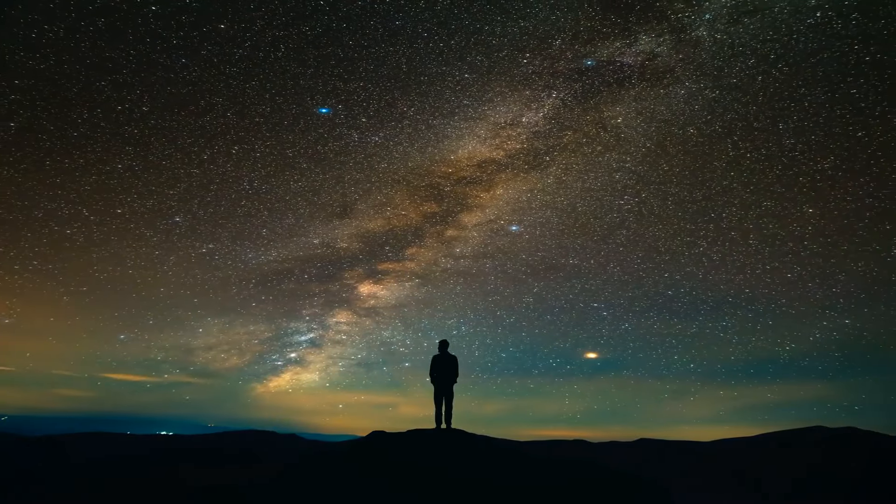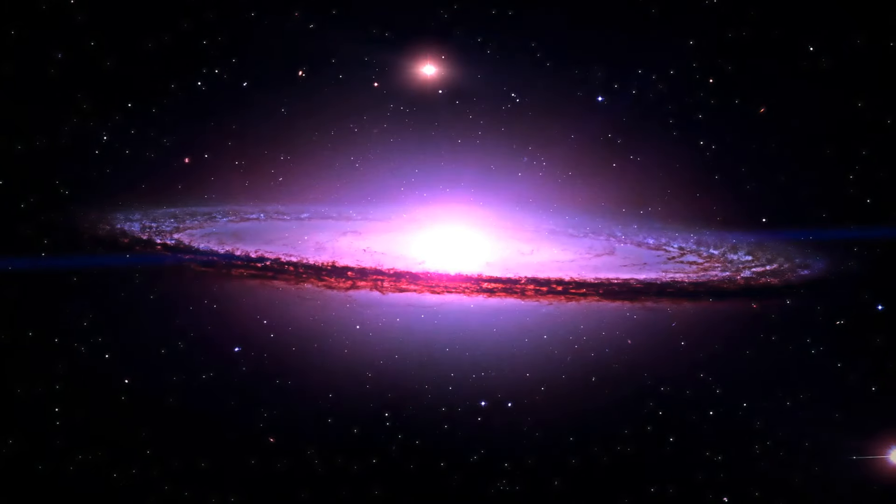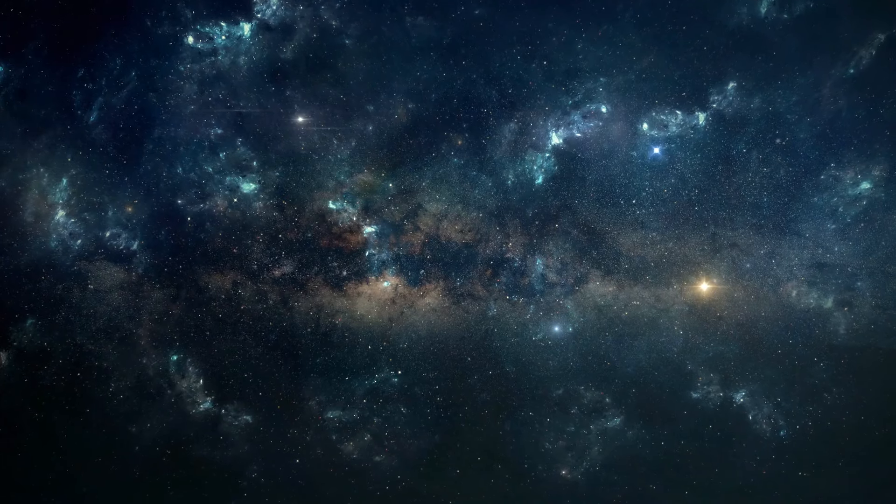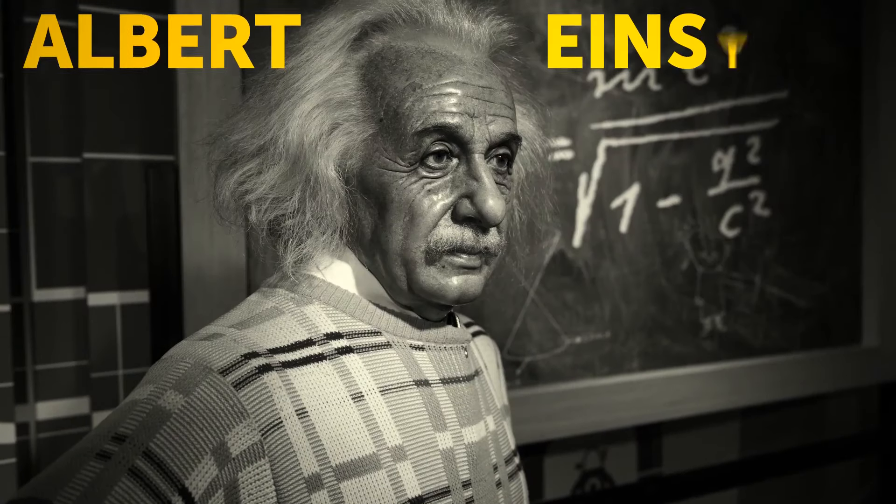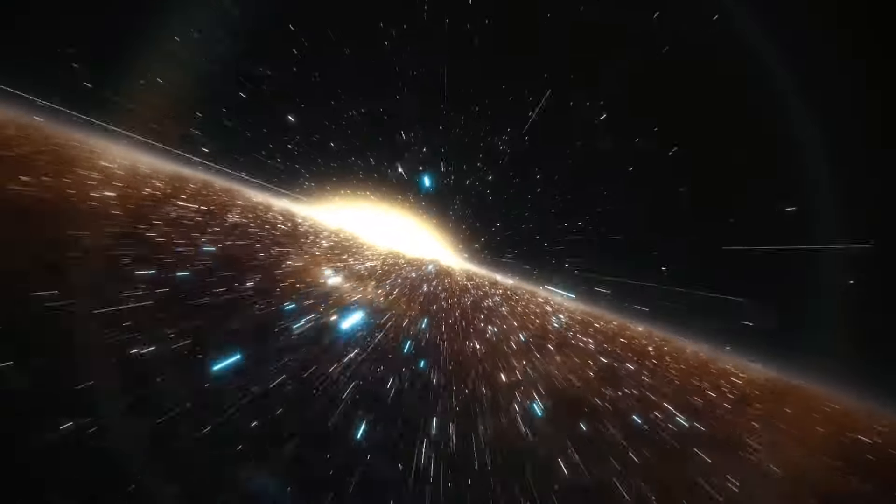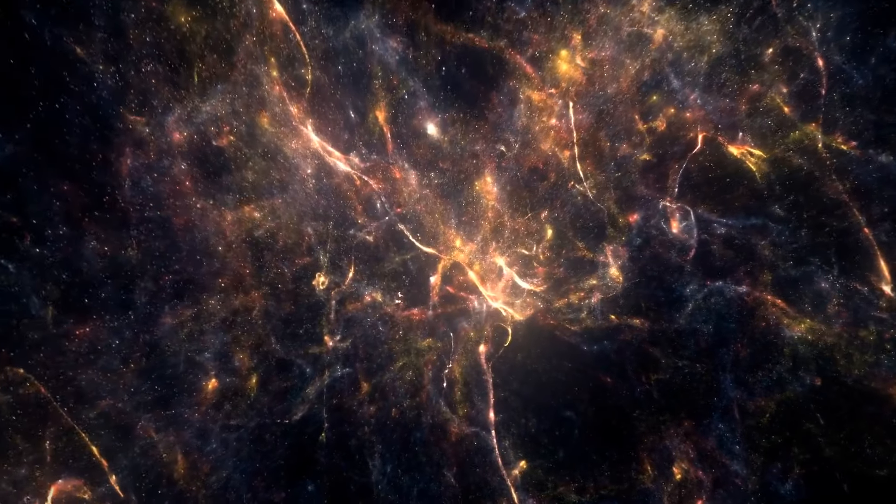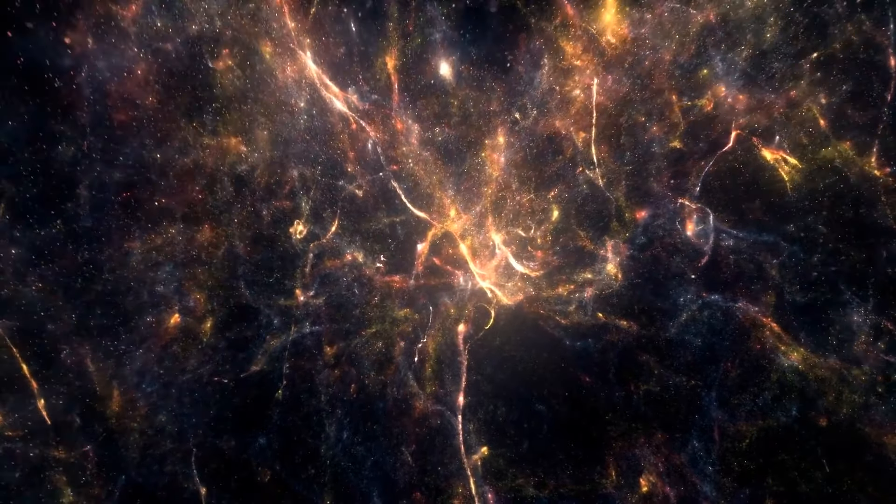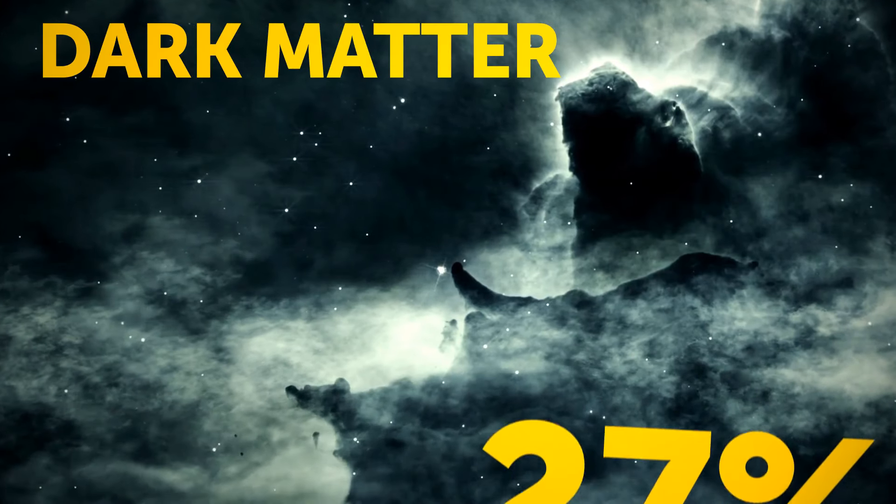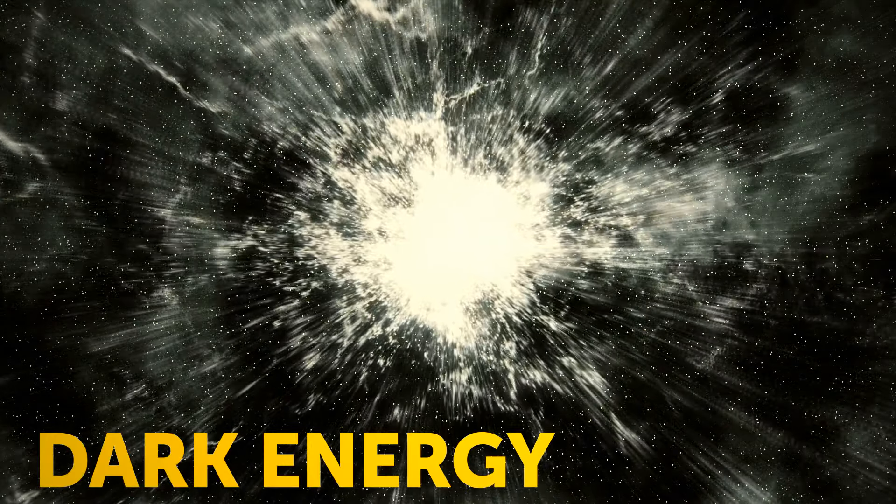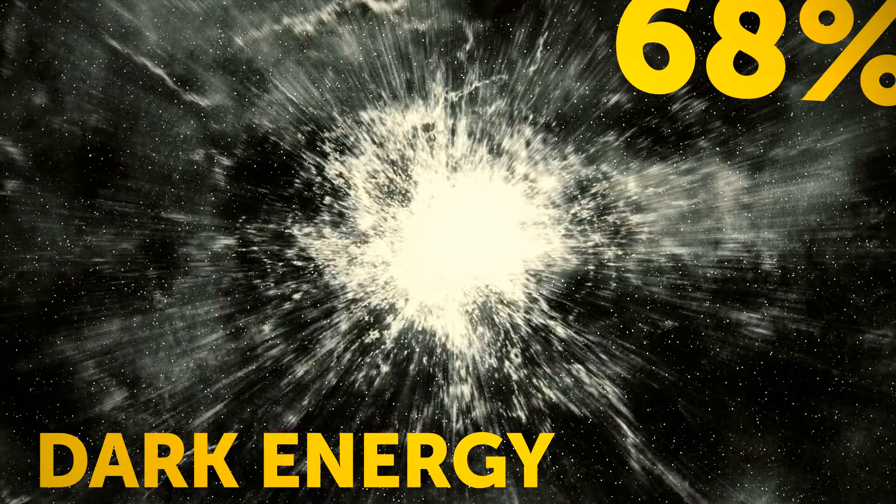Humans explore the universe all the time, but we can only see around 5% of the matter up there. And Albert Einstein was the first one that realized the empty space is not really nothing. The rest we can't see is actually made up of invisible matter, also known as dark matter. It's about 27%, combined with something called dark energy, which is 68%.